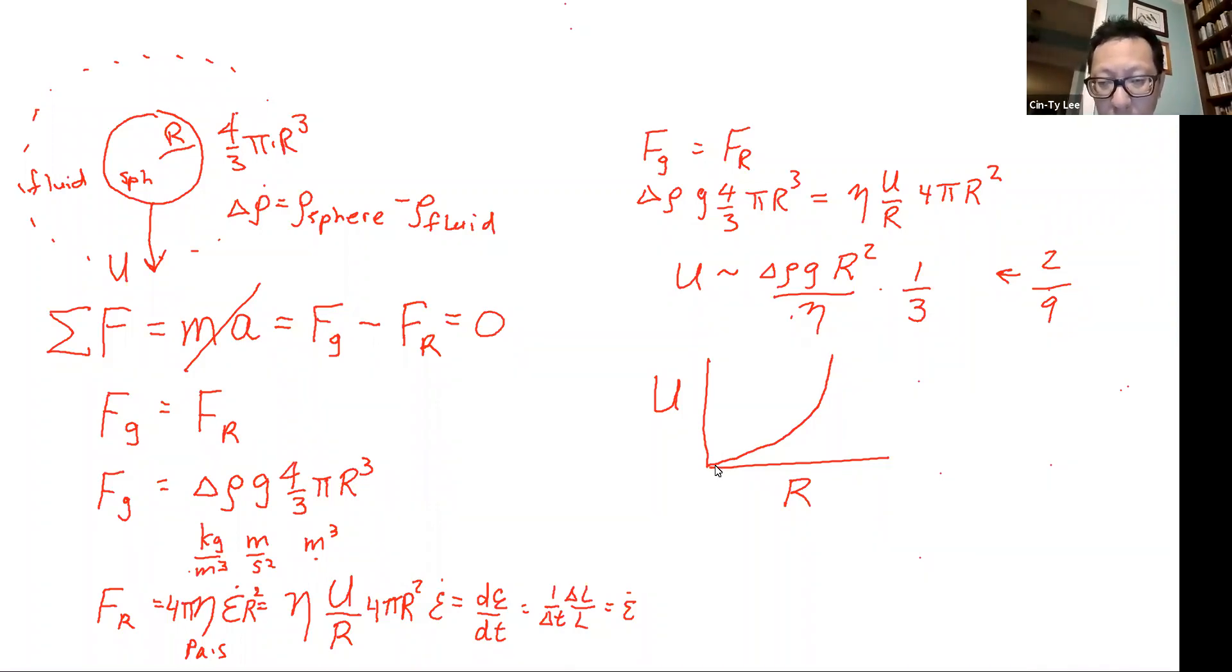Now we can have different types of sinking rates, this right here, this one. This might be for a high viscosity. This one would be for a low viscosity.